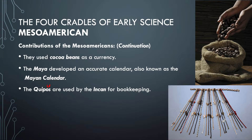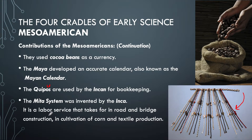The kipu is cited as one of the earliest calculators — similar to how the Chinese are known for the abacus. Also, the mit'a system was invented by the Incas: a labor service used for road and bridge construction, cultivation of corn, and textile production. These are the most important contributions of the Mesoamericans as one of the four cradles of early science.